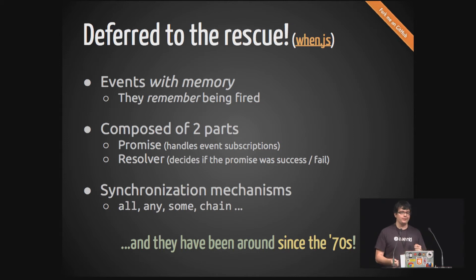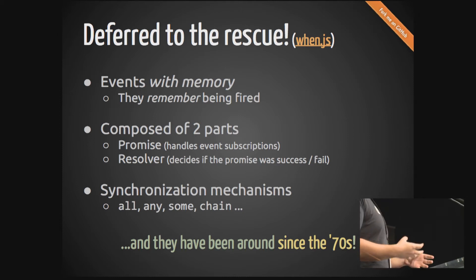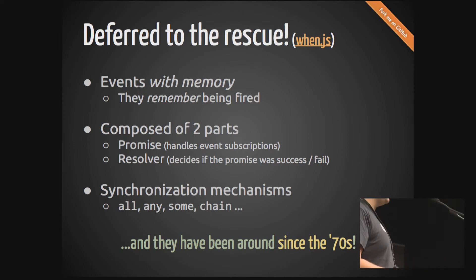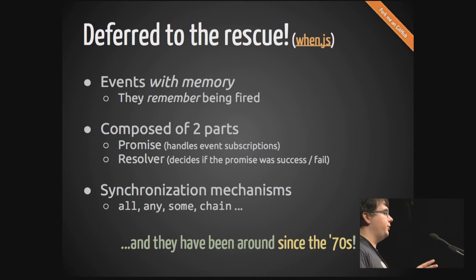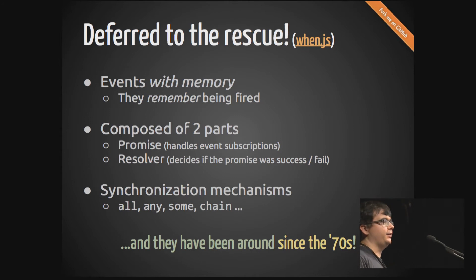In JavaScript, they've been around since around 2007 with the Dojo library and they are getting more widespread now. Basically they are called deferreds, or you might have heard of them as futures or promises. They have lots of names, but the pattern is basically the same.